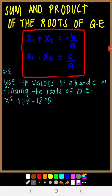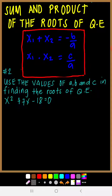Let's do example number 2: use the values of a, b, and c in finding the roots of a quadratic equation. Instead of using the four methods — factoring, extracting the square root, quadratic formula, or completing the square — we will use the sum and product of the roots. The equation x squared plus 7x minus 18 equals 0 is already in standard form. So a is 1, b is 7, and c is negative 18.